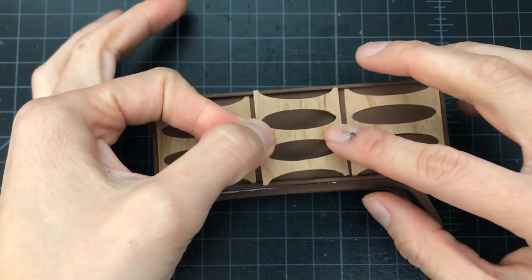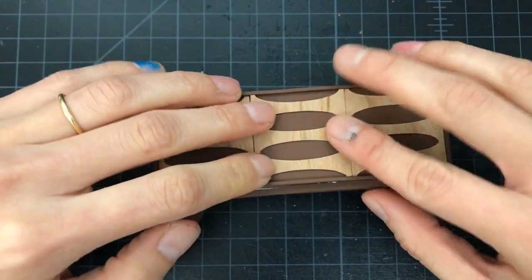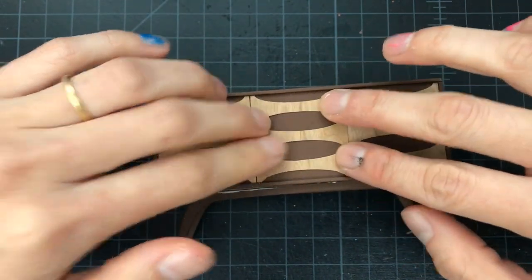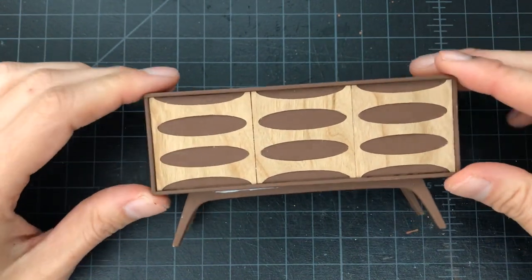And for the last step, I glue on the decorative panels. And yes, I see the oozing glue and I'll clean it up. I promise.